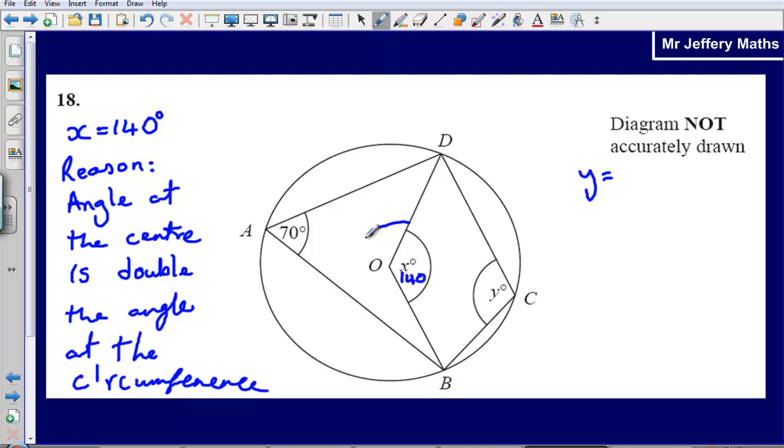Well, what we could then say is this angle here must be 220 degrees, because there are two angles that are around the point together. And then now we've got another angle at the centre and another angle at the circumference. We could then say that that's 110 degrees. So we know that y is 110 degrees.